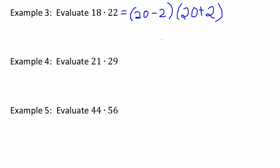That means it's the same as the first number, 20 squared, which is 400, minus the second number, 2 squared, which is 4. And so 18 times 22 is just 396.